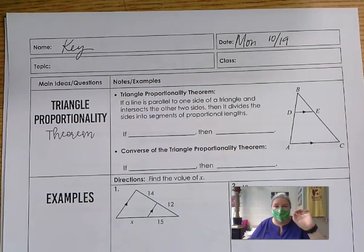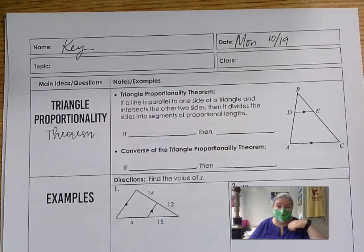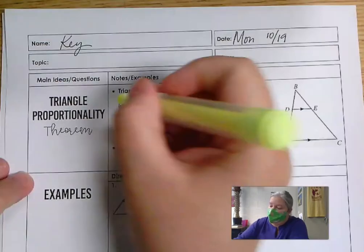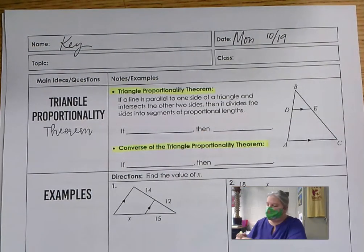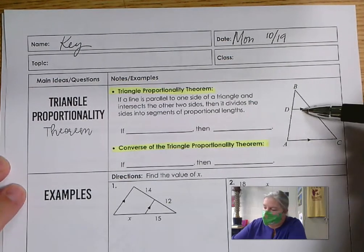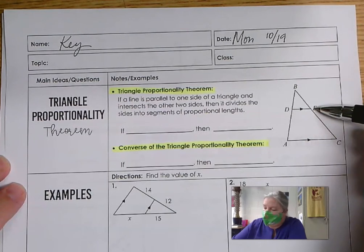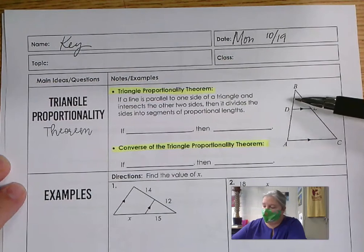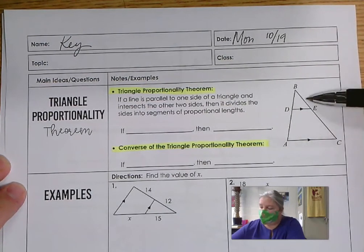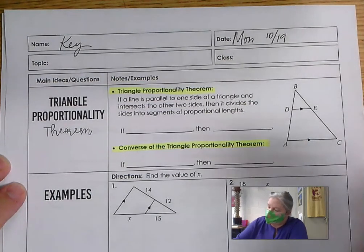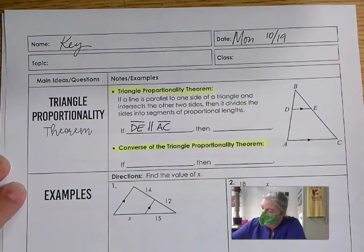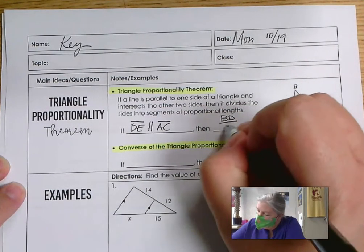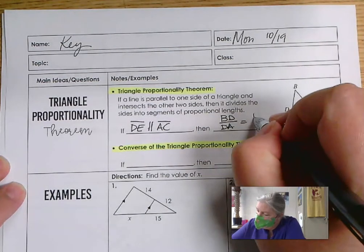The first of these theorems — let's go with 3 — is called the triangle proportionality theorem. And we also have its converse. The triangle proportionality theorem says: if a line is parallel to one side of a triangle and intersects the other two sides, then it divides the sides into segments of proportional lengths — meaning these two segments have lengths proportional to these two segments. So if DE is parallel to AC, then BD over DA equals BE over EC.